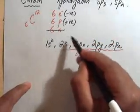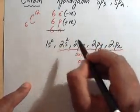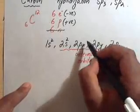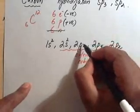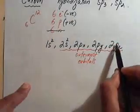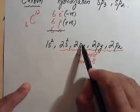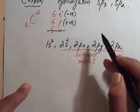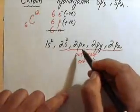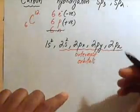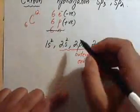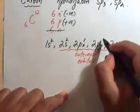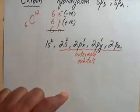The 2s orbital is the next highest energy level, so 2 of the electrons will be going into this orbital. Then the 2px, 2py and 2pz orbitals are present at exactly the same energy level, so the electrons will first fill these orbitals with only one electron each. In the case of carbon, there are only two electrons left — four electrons already occupy the 1s² and 2s² orbitals — so one electron goes into the 2px orbital and one into the 2py orbital.